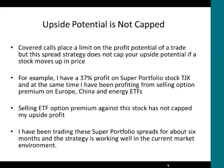At the same time I've been profiting from selling option premium on the EFA index — which is the Europe, Far East, Asia index — and I've also been selling call options against the China FXI and energy ETFs. I've been able to profit on these super portfolio stocks and at the same time profit from selling option premium on these weak sectors. I've been trading these super portfolio spreads for about six months and it's working well in the current market environment.